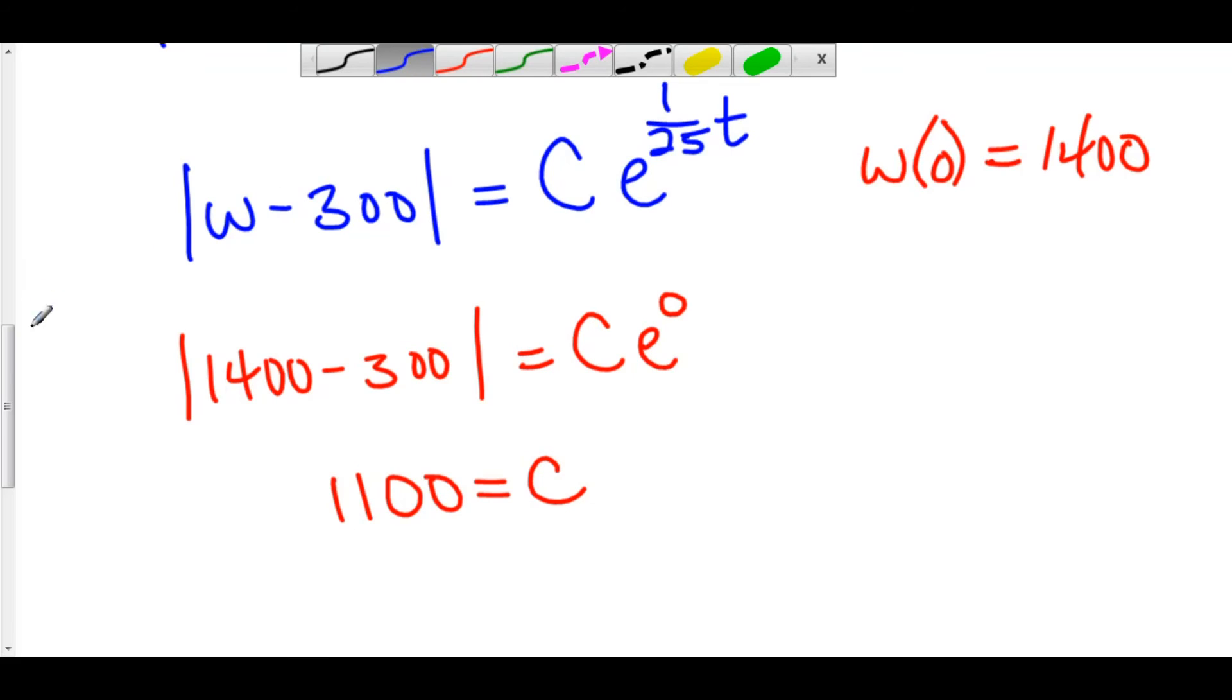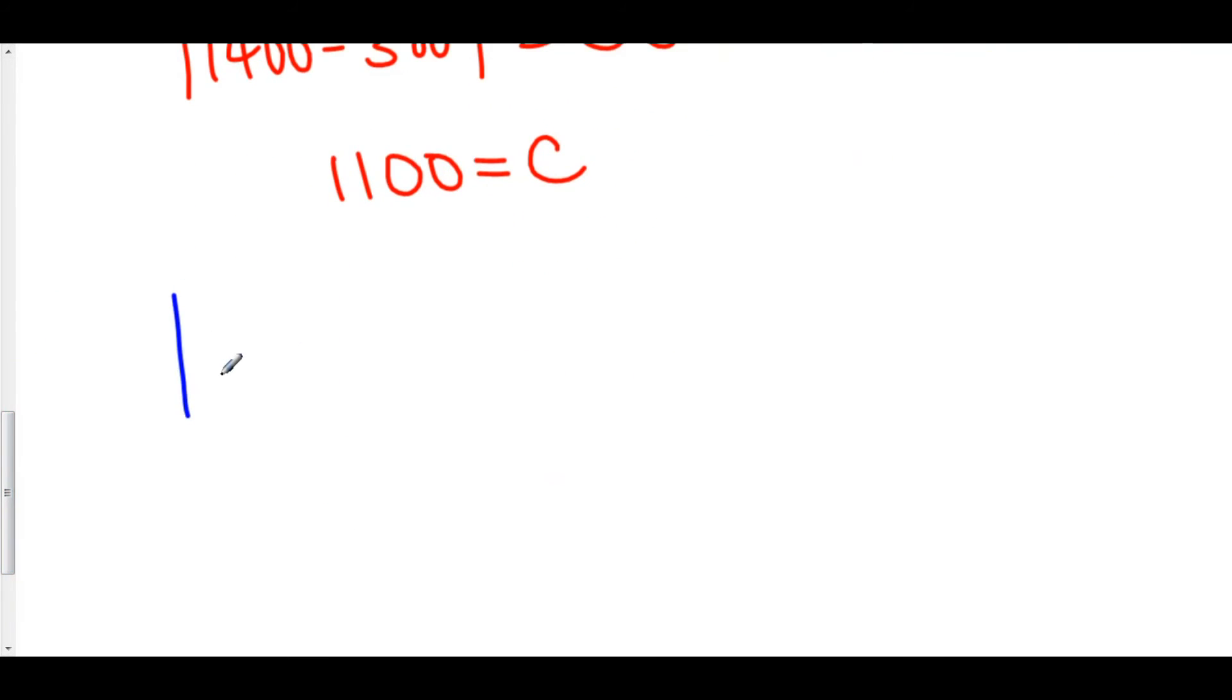I can now plug this into my equation. So we have |w - 300| equals 1100e^(1/25t). Now this absolute value right here means that the right hand side always has to be positive. That's why it's here. However, our right hand side does always have to be positive. Here's a little trick for the future.